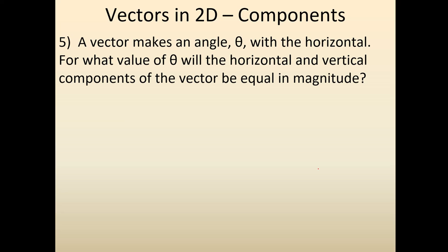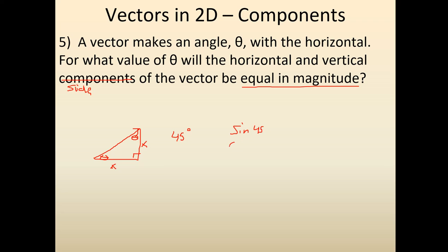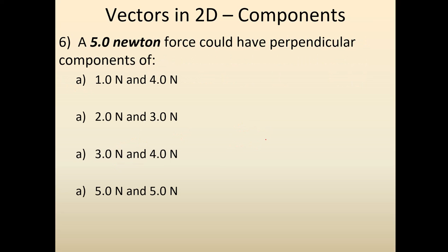Here's the next question — pause the video. They say we have a vector that makes an angle and they're asking about the horizontal and vertical sides being equal in magnitude. The only angle where this works is 45 degrees. A 45-45-90 right triangle has two equal sides. You can test this by doing sine of 45 and cosine of 45 — they give you the same number. So anytime you have something at 45 degrees, you know those two sides are the same.